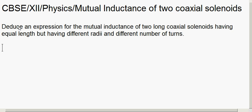Now, the first question is: what is coaxial? Coaxial means common axis, so both solenoids are placed in such a way that they have the common axis, or their axis is the same. We'll draw a figure to represent these two coaxial solenoids. Important points to note: they are coaxial, having equal length, different radii, and different number of turns.